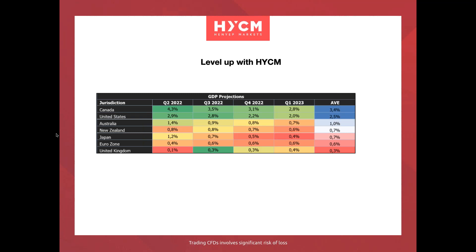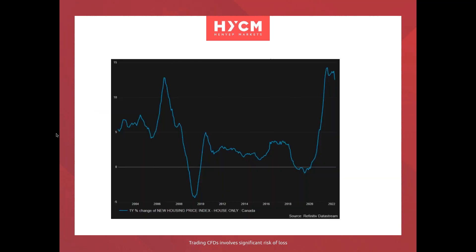Looking at GDP projections, Canada's economy is projected to grow at 4.3% in Q2 2022 — the strongest growth out of the UK, Eurozone, Japan, New Zealand, Australia, and the US. The US is expected to have the second strongest GDP growth, which is a further boost for Canada. Oil prices have also been surging on tight supply and a weak dollar, and Canada exports huge amounts of oil, so any uptick in oil prices further supports Canada.